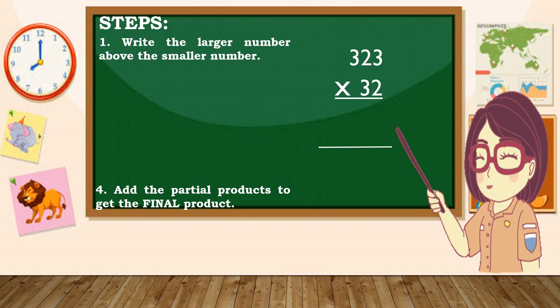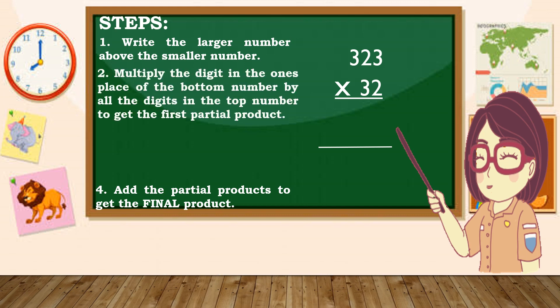Next step: multiply the digit in the ones place of the bottom number by all the digits in the top number to get the first partial product. Uunahin natin i-multiply ang number na nasa ones digit which is 2. So 2 times 3 is 6, 2 times 2 is 4, 2 times 3 is 6. 646 is our first partial product.